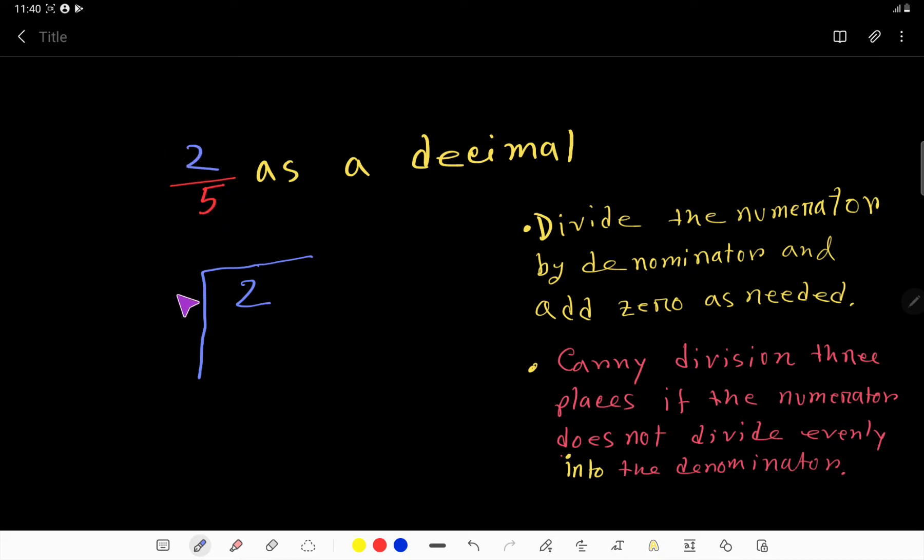This 2 is smaller than 5, so we can rewrite it as 2 decimal point 0, or 2.00. You can take any number of zeros after the decimal point. Let's say I've taken one zero here.